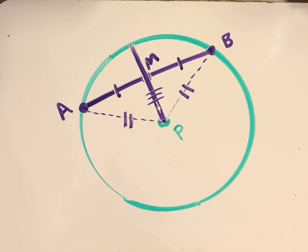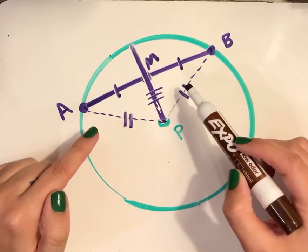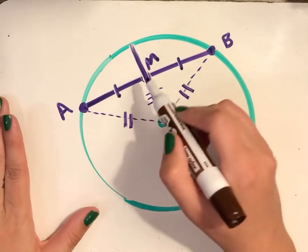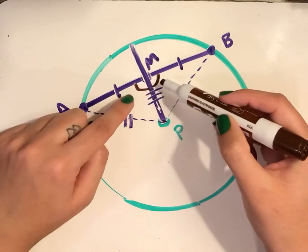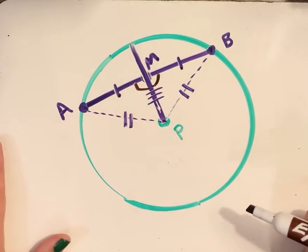I can now apply CPCTC, which is, if we don't remember, corresponding parts of congruent triangles are congruent. So that means that all of the corresponding angles between these two triangles have to be congruent to each other. For example, this angle here and this angle here are corresponding, so they have to be congruent.